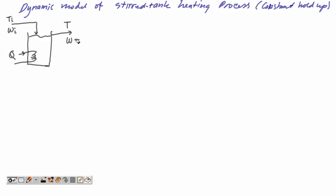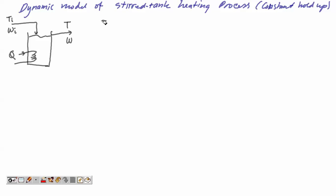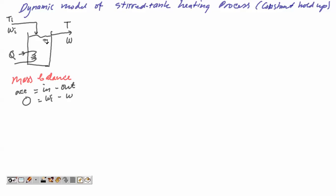The system has constant holdup — we install the output pipe at the top so the volume is always constant. Because the volume is always constant, from the total mass balance, accumulation equals input minus output. Accumulation is always zero, so Wi is always equal to W.